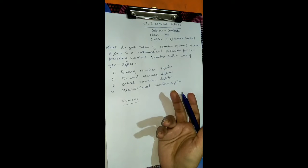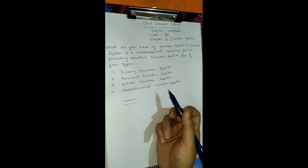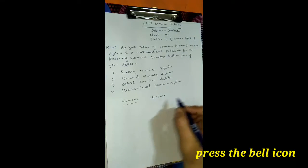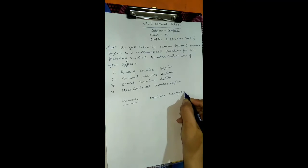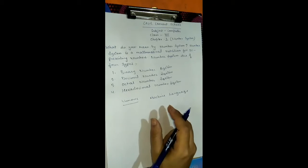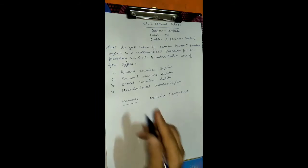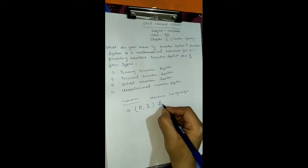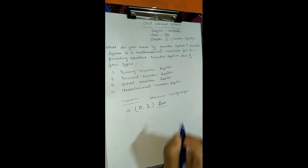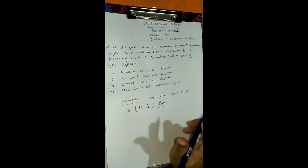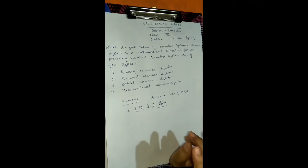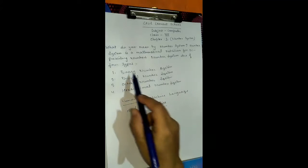As you all know, a computer is an electronic machine and it can understand only machine language. Machine language uses only the values zero and one — these are the bits understood by the machine, that is, the computer. So machine language means values of zero and one.